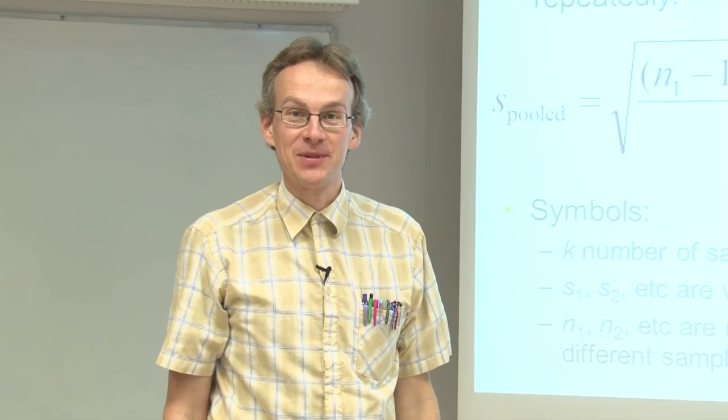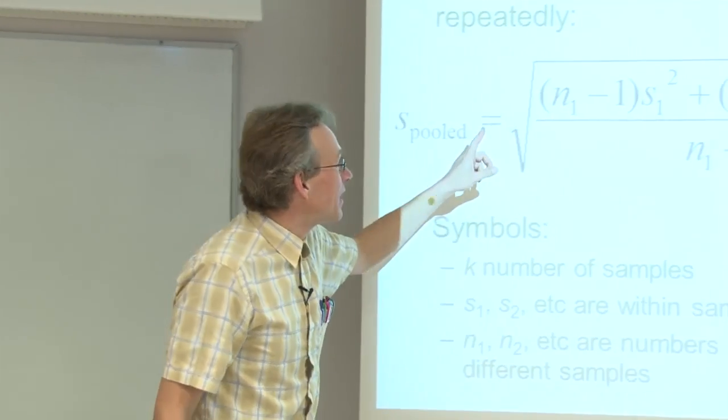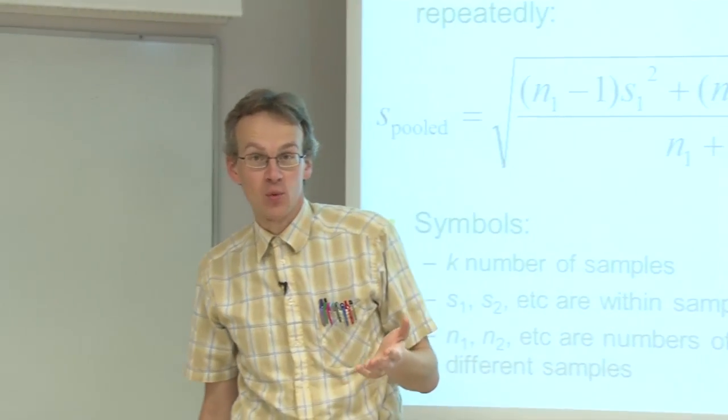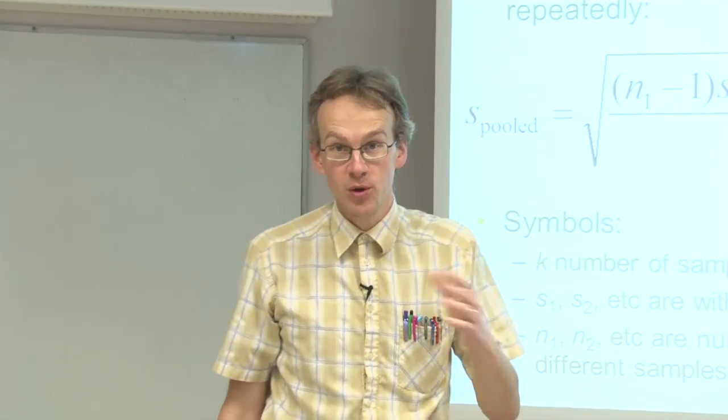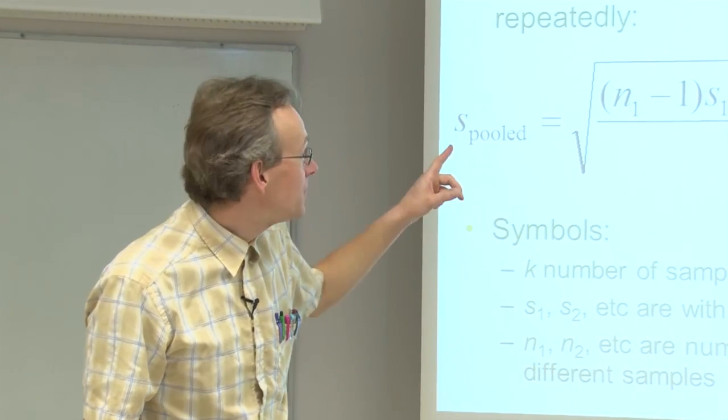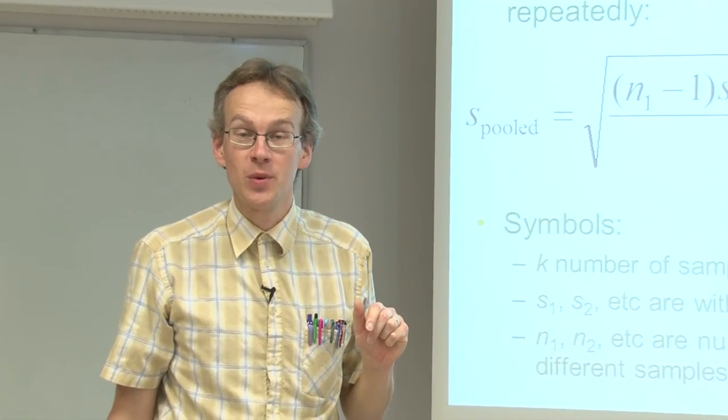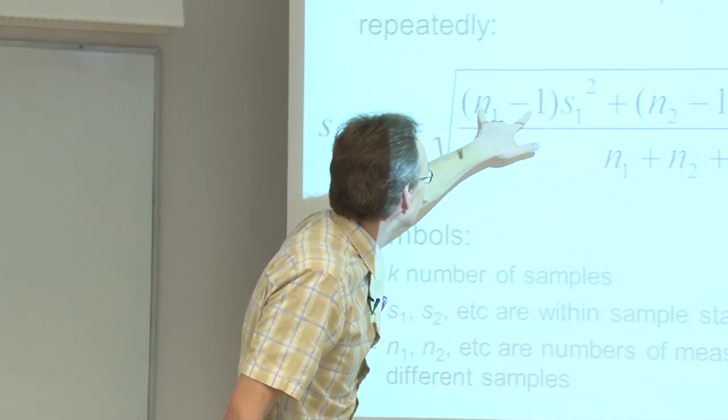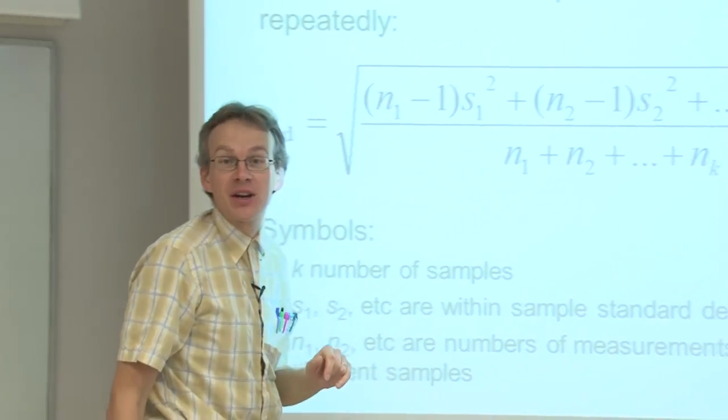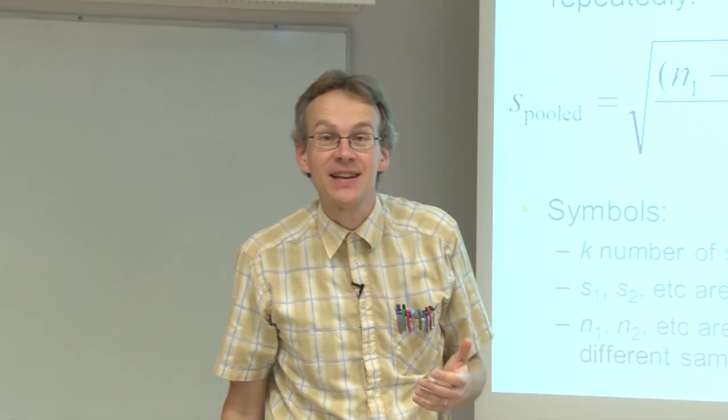We see from this formula that with every sample we can make a different number of measurements. On one sample we can make maybe two, with the other one five, and this is fully okay. These different standard deviations then will be taken into account by different weights. So all these n-1s here can be regarded as different statistical weights.